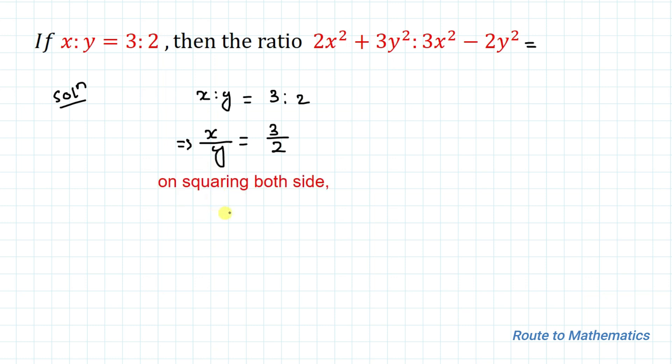On squaring both the side, we have x by y whole square equals to 3 by 2 whole square. That is nothing but x square by y square equals to 3 square is 9 and 2 square is 4.